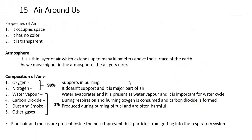Summary of chapter 15 — Air Around Us. Properties of air: it occupies space, has no color, and is transparent. Atmosphere is a thin layer of air extending up to a few kilometers above the surface of earth; air gets rarer as we go higher. Composition of air: oxygen and nitrogen together make up 99%, while water vapor, carbon dioxide, dust, smoke and other gases make up 1%. Oxygen supports burning; nitrogen does not support burning and makes up about 78% of air. Fine hair and mucus inside our nose prevent dust particles from entering the respiratory system.